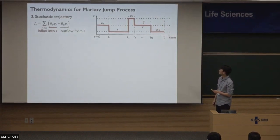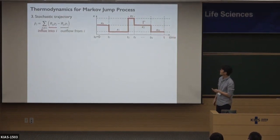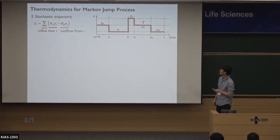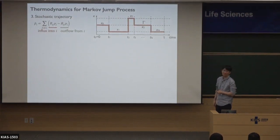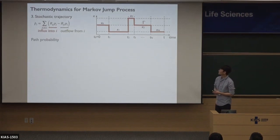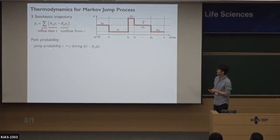This is one example of a stochastic trajectory of the Markov jump process. It starts from state X_0. At time T_1 it jumps from X_0 to X_1, stays at the same state, then at time T_2 it jumps from X_1 to X_2, and so on. The final time is tau. We want to evaluate the path probability. The jump probability from state I to state J during delta T is given by R_JI times delta T, because R_JI is the transition rate from I to J.